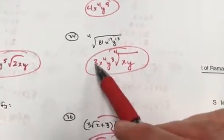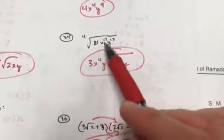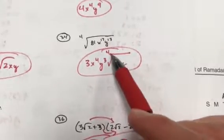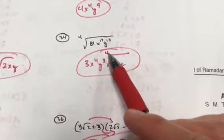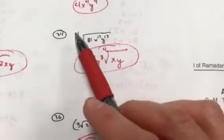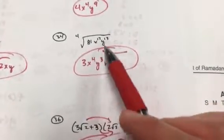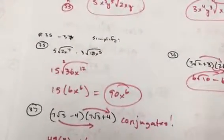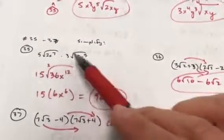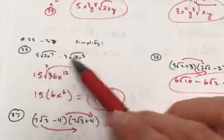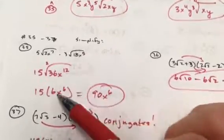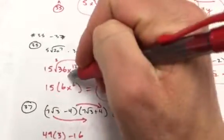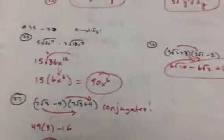For the fourth root of 81, you get 3; 4 goes into 17 four times with 1 left over — don't forget the index 4 for the fourth root. 4 goes into 13 three times with 1 left over. Multiply 5 and 3 on the outside and multiply within, and it breaks down nicely on number 35.